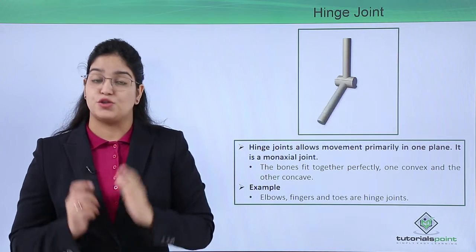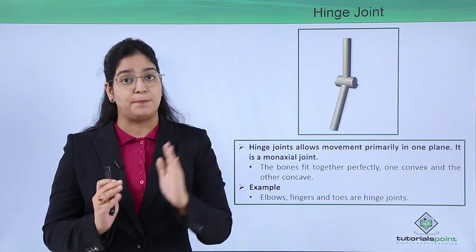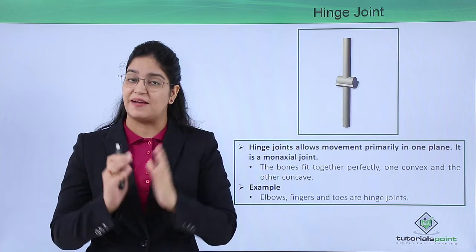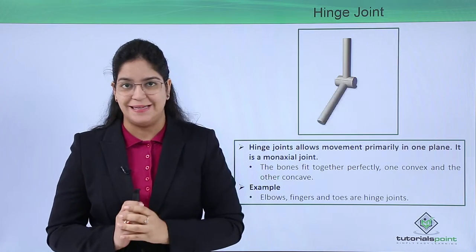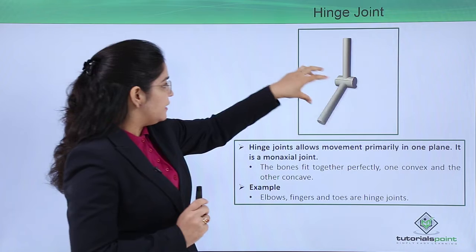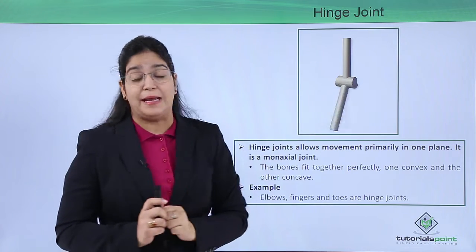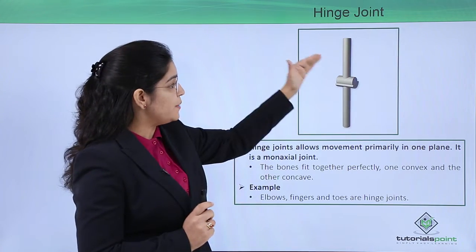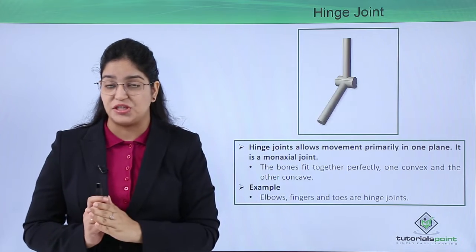A hinge joint shows one plane movement, that is why it is called mono-axial movement. This joint is very perfect because here one bone has a concave shape and the other has a convex shape, so that they can easily fit into each other.